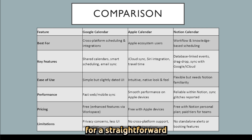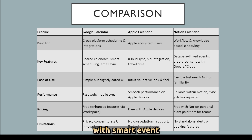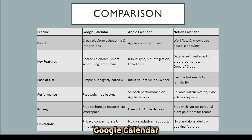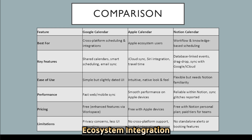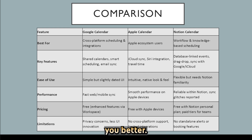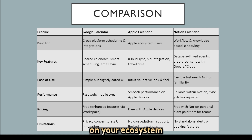If you're looking for a straightforward, universally accessible calendar with smart event suggestions and no cost, Google Calendar is a solid pick. But if your priorities include room bookings, delegate access, and deep Microsoft ecosystem integration, Outlook Calendar suits you better. Both serve different audiences — choose based on your ecosystem and feature needs.